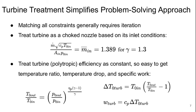We can treat turbines in a simplified manner that's going to make our problem-solving approach a lot more practical. Matching all four of those constraints listed previously generally requires some iteration, but if we treat our turbine as a choked nozzle based on its inlet conditions, then the non-dimensional mass flow is a constant which is 1.389 for our gamma in the turbine of 1.3.